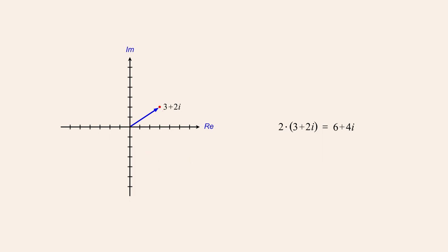When we multiply the complex number 3 plus 2i by 2, giving us 6 plus 4i, we see that the resulting vector points in the same direction as the original vector but is twice as long. In other words, the modulus has been multiplied by 2. We can also say that this vector has been scaled by a factor of 2. For this reason, when discussing vectors, real numbers are sometimes referred to as scalars.